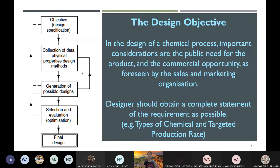After identifying all possible designs, you select and evaluate. In your report, you are required to discuss two different processes to produce the same chemical — discuss the advantages, disadvantages, and justify why you chose one. You may discuss more than two but only two are required. During consultation I will ask you about the possible methods and you can discuss with me which to choose.